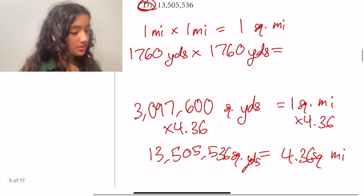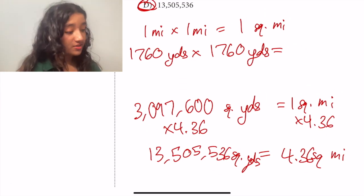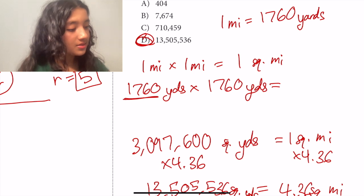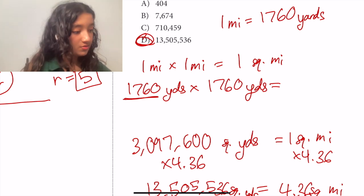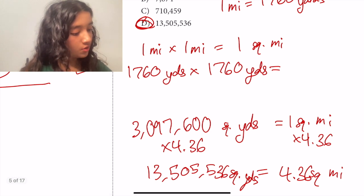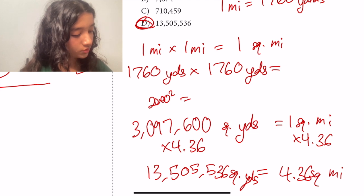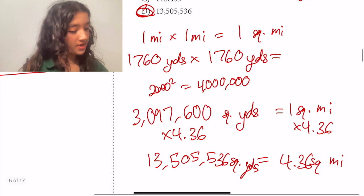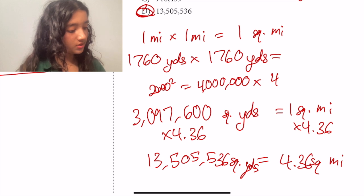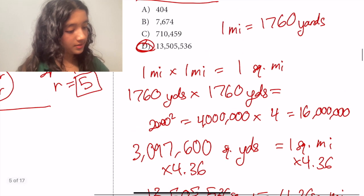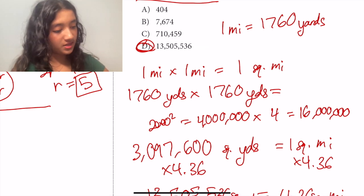So in this case, I used a calculator just to show you that it is the exact value. But you could also estimate it by seeing that maybe 1,760 is close to 2,000, which is much easier to work with. So if you had 2,000 squared, that would be, well, 2 squared is 4, and then you have six zeros. And then if you multiply that by 4, because 4 is approximately 4.36, then you would get 4 times 4 is 16, followed by six zeros. And that's closest to answer choice D, which isn't really close to any of the other ones.